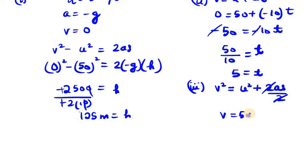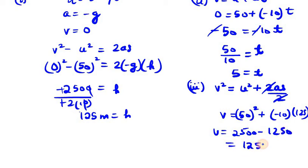v² = 50² + (-10)(125). s is 125 from the first part. So v² = 2500 - 1250. We are left with 1250.